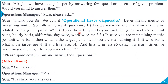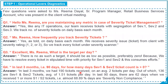We call it operational lever diagnostics — lever meaning metric or measuring unit. Following are four questions. Question one: do we measure and maintain any metric related to this given problem? Question two: if yes, how frequently do you track the given metric — per unit basis, shift-wise, day-wise, or week-wise? Question three: if you are maintaining a metric per unit basis, what is the target for each unit? Shift-wise, what is the target per shift? And question four: in the last 90 days, how many times have we missed the target for the given metric? Please spare the next 30 minutes to answer these questions.